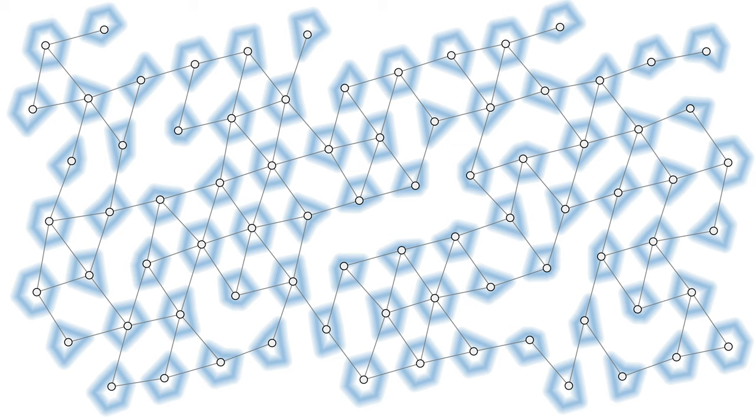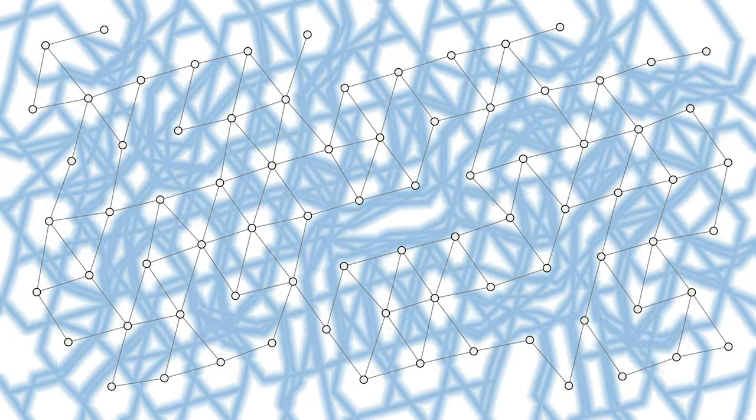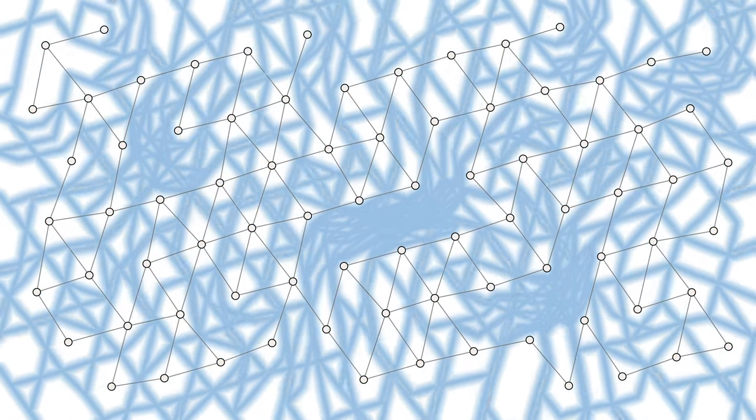Each node tells all its neighbors the distance to itself, plus its identifier, and this information is forwarded. We'd have n waves in progress simultaneously. Well, if this was the local model, it would be just fine. But in the congest model, this won't work.